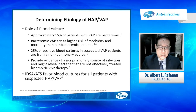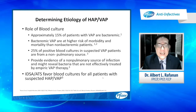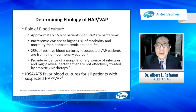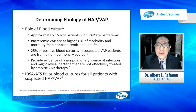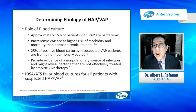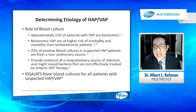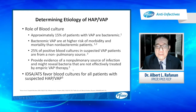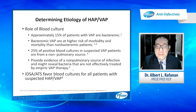What is the role of blood cultures? The IDSA and ATS favor blood culture for all patients with suspected HAP and VAP. Approximately 15% of patients with VAP are actually bacteremic, and bacteremic VAP patients are at higher risk of morbidity and mortality. Importantly, 25% of positive blood cultures in suspected VAP patients are from non-pulmonary sources. Blood cultures also help identify bacteria not effectively treated with empiric VAP treatment and assist with de-escalation.